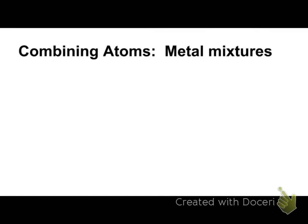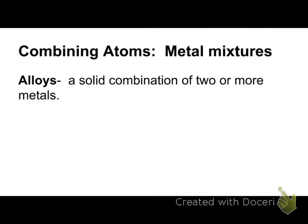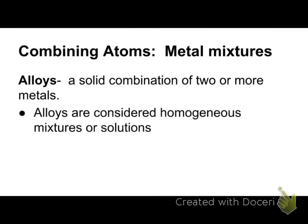We're going to look at some different metal alloys and the reasons why we have them. An alloy is a solid combination of two or more metals. When we had the brass that we made — the brass penny — that's a solid combination. These are considered homogenous, also called solutions. Homogenous means that when you cut into a metal, you have an equal distribution of those atoms throughout.